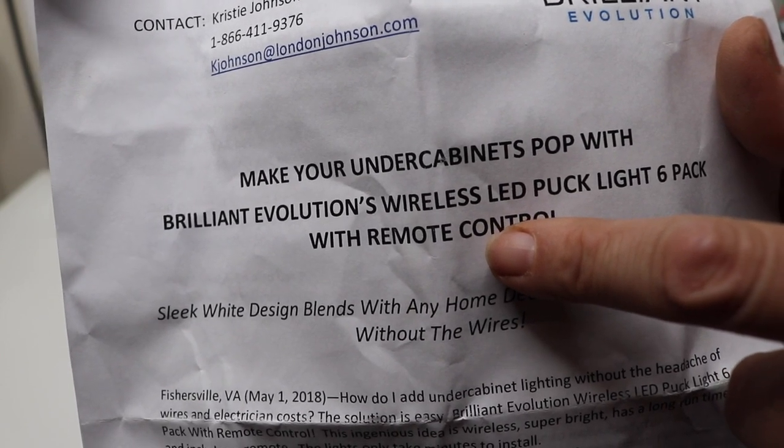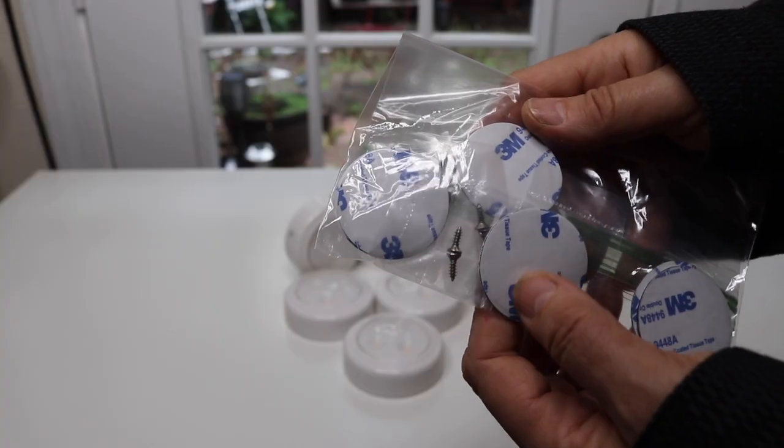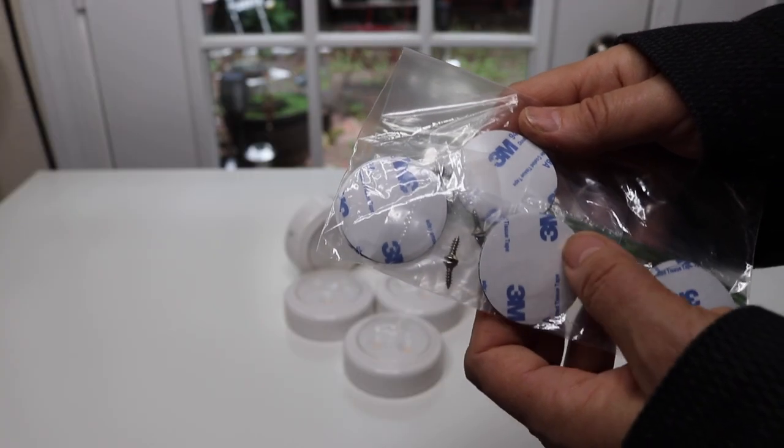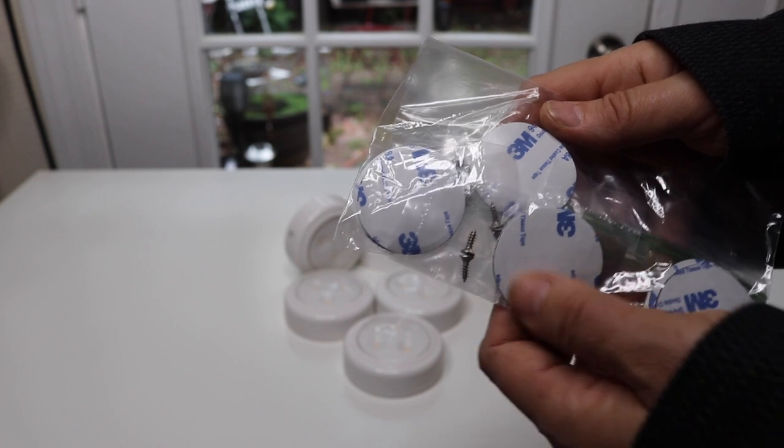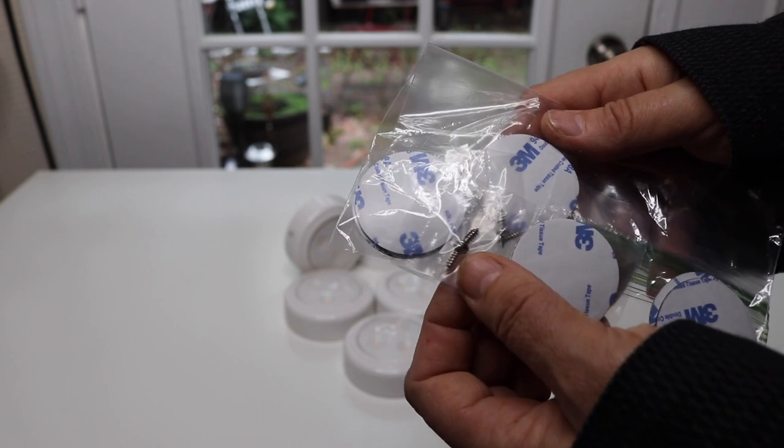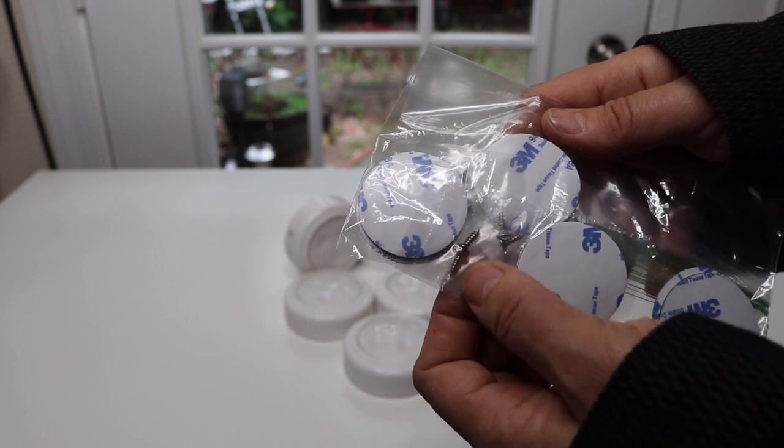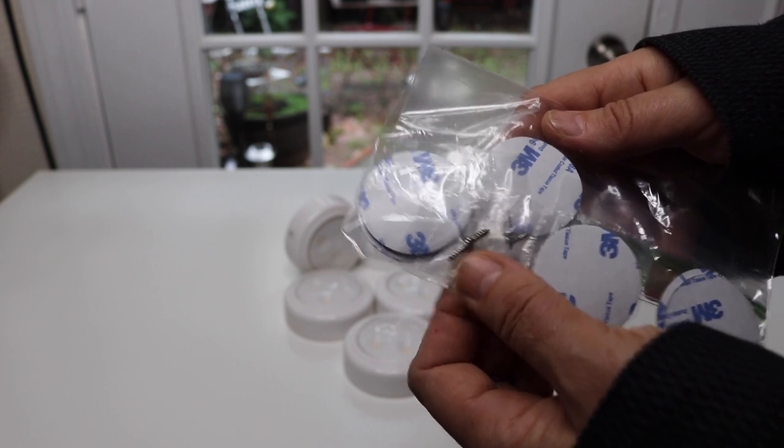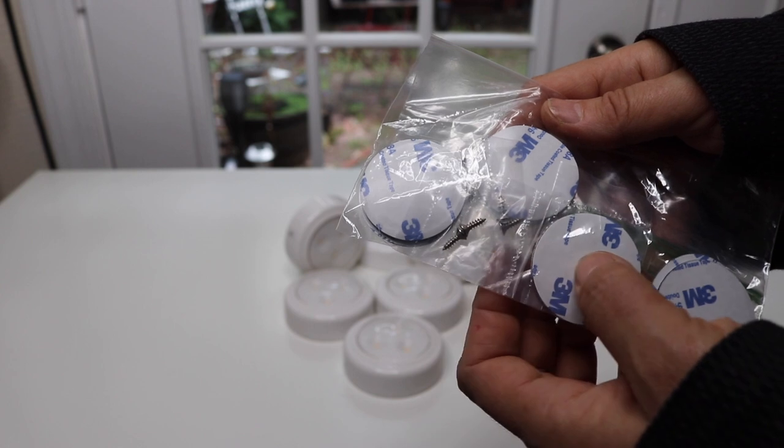So let's take a look at the lights. With the lights you get these little sticky pads, so you can stick them anywhere you want. If you want to screw them into the wall or at the cabinet, it also comes with little screws, so you have the option of either way to attach them.